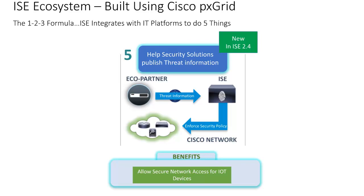Security solutions or ecosystem partners can also publish threat information or customized information into ISE via PXGrid, so ISE can take actions based on the defined authorization policies. These ISE authorization policies adhere to an organization's security policy. As an example, a security solution publishes threat information into ISE. Once the endpoint connects to the network and is classified to have this threat information, ISE would then enforce network access as defined by the authorization policy.